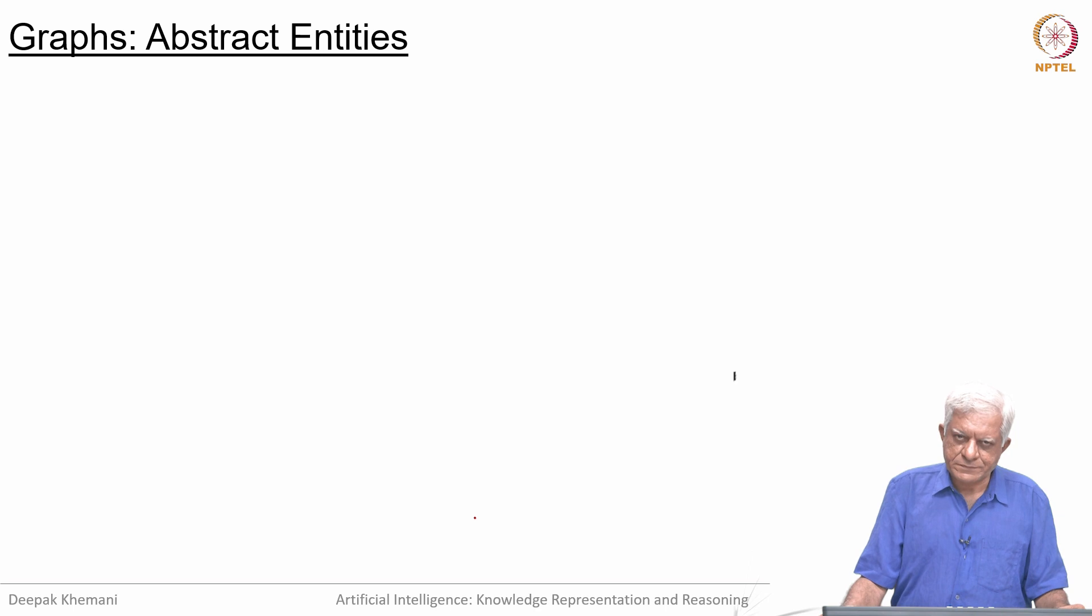Welcome back. As promised, now we are going to talk about graphs a little bit. The first thing I would like to say about graphs is that graphs are abstract entities. They are composite structures made up of nodes and vertices.